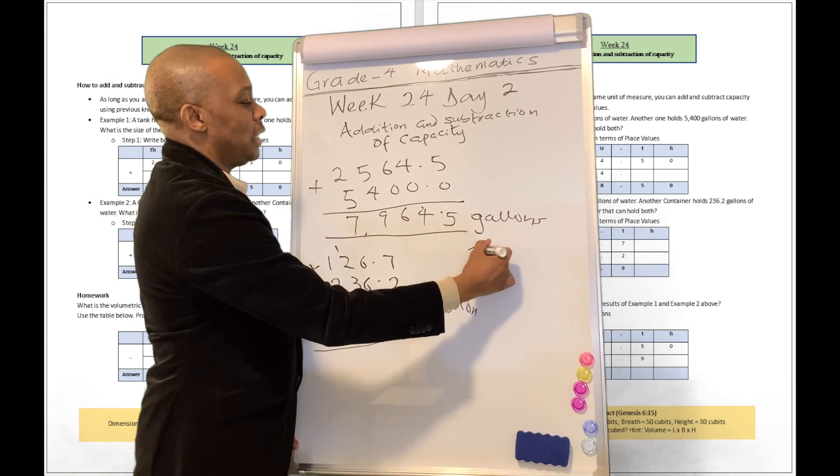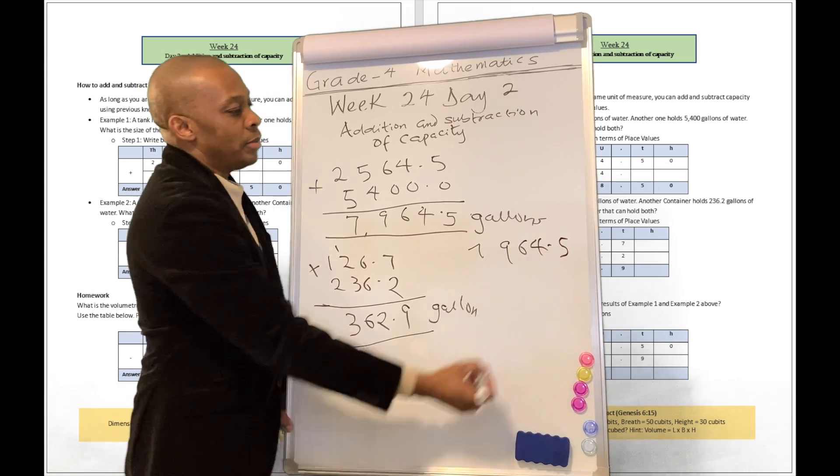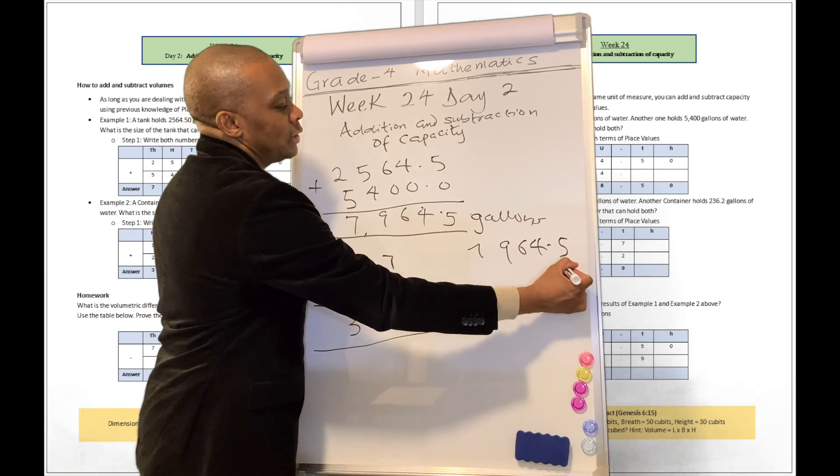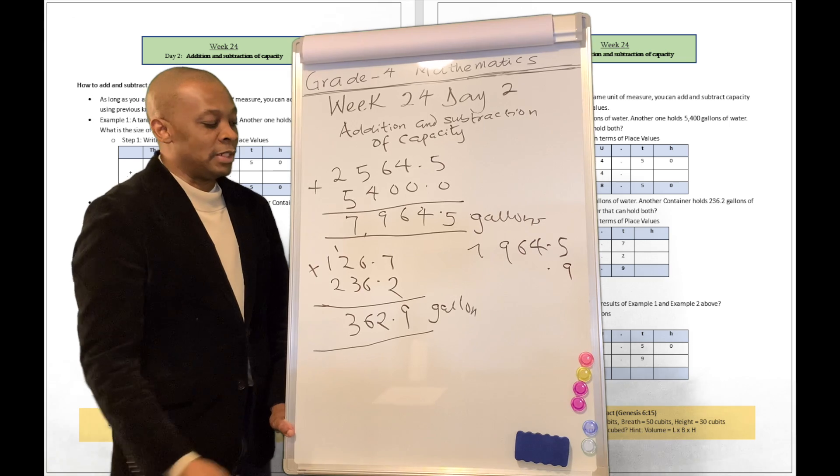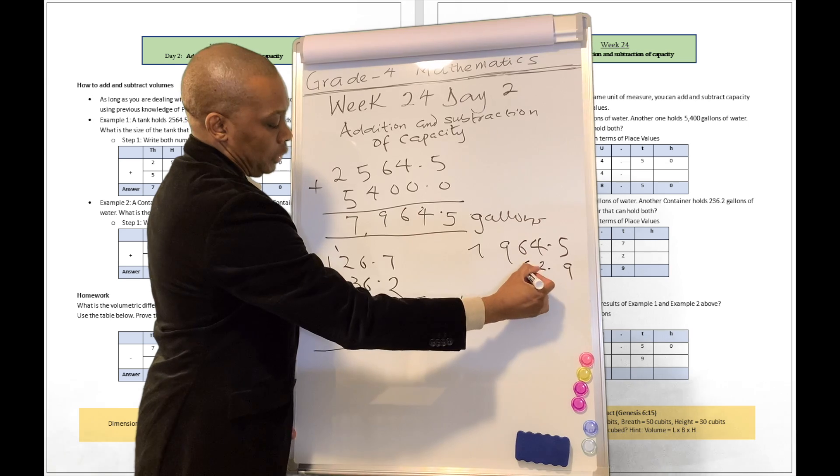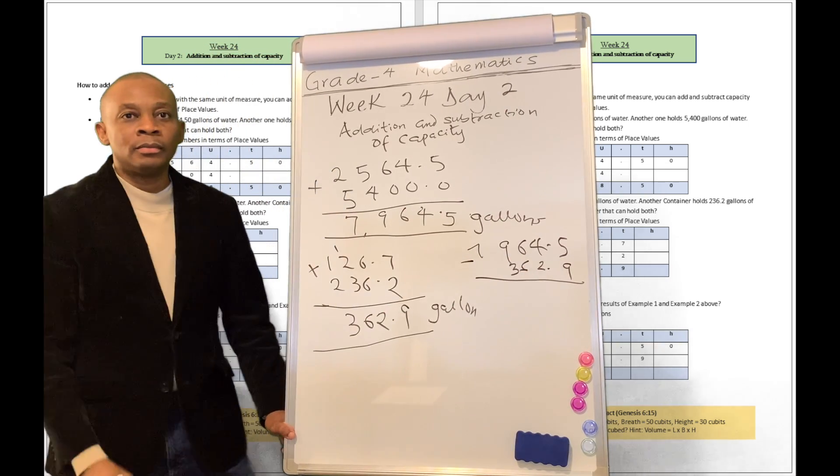So we're going to say 7, 9, 6, 4, 0.5. We want to make sure that our decimal points are going to line up together. That is a digit to the right of a decimal point. And then you are going to write your 2, your 6, and your 3. And you just subtract it.